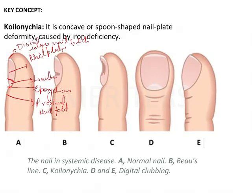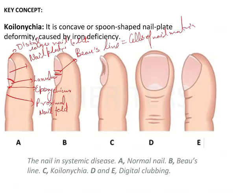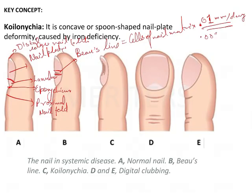If you see certain horizontal lines on the nail plate, this particular thing is known as the Beau's lines. Beau's lines basically signify some systemic disease in which there is a pathological arrest in the cells of the nail matrix. There will be slow growth of the nails in this condition. Generally 0.1 mm per day is the growth rate of the nails, but it can reduce to 0.05 mm per day or even less when there is some pathological condition.